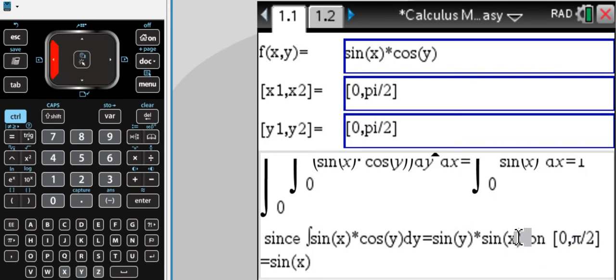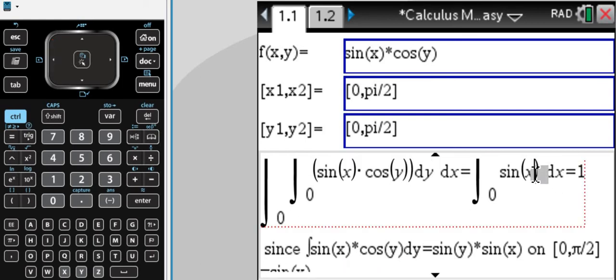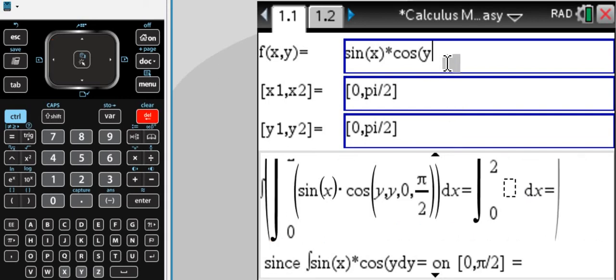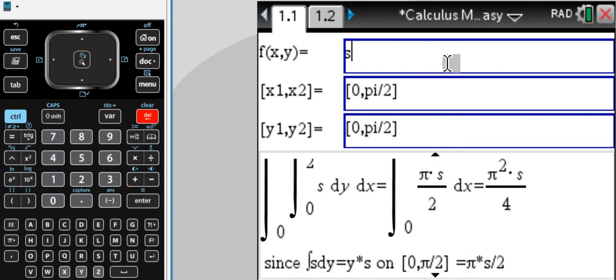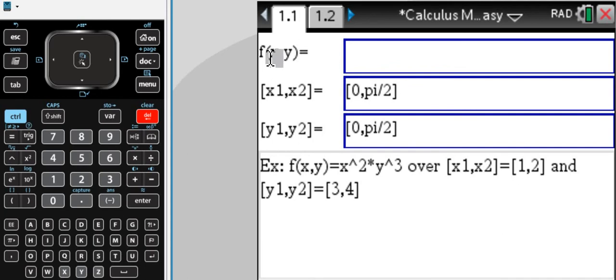And then over the interval from zero to pi over two. And when we do that out, when we plug in our bounds, we end up with just the integral of sine of x. That's why we have sine of x left here. And of course, you can do this integration for any function with respect to x and y.